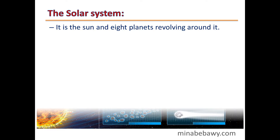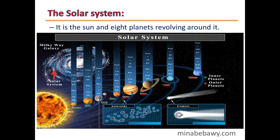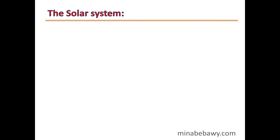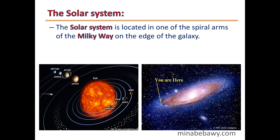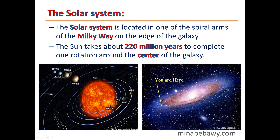The solar system is the sun and 8 planets revolving around it. The solar system is located in one of the spiral arms of the Milky Way Galaxy, on the edge of the galaxy. The sun takes about 220 million years to complete one rotation around the center of the galaxy.